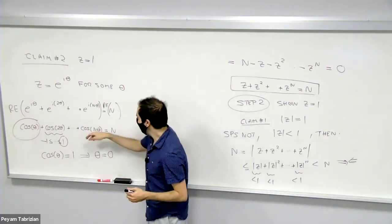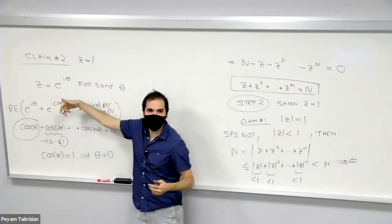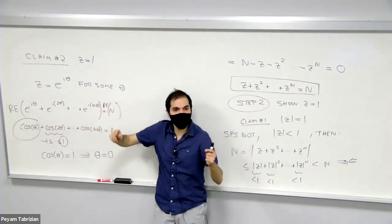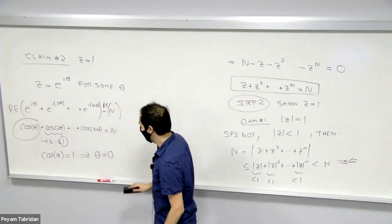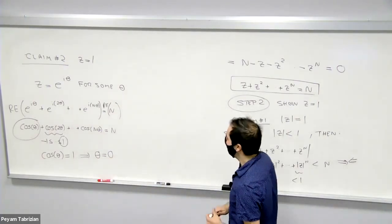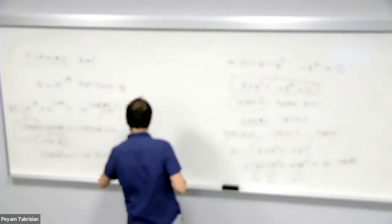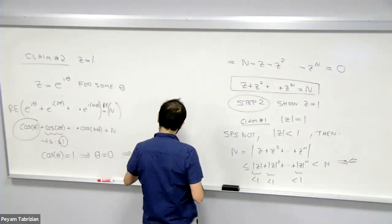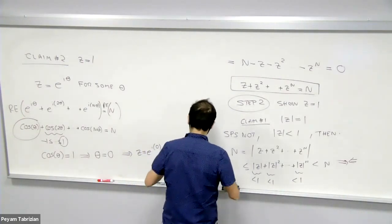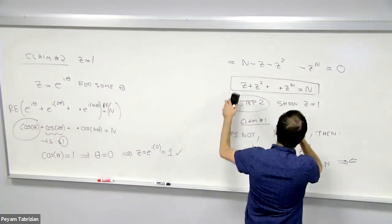0 and 2π. And again, to reiterate, because if even one of those terms is less than 1, there's no way that if you add up all n of them, you get n. So kind of worst case scenario. But then if θ is 0, that means z = e^(i·0). And that's 1.